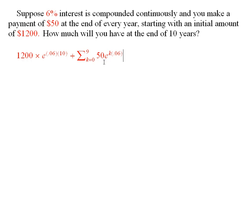The payment that is made at the very end, at the end of the 10 years, that one doesn't sit in there for any length of time, and so that corresponds to k equal to zero.